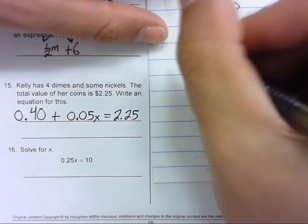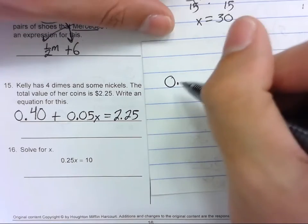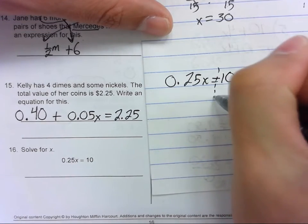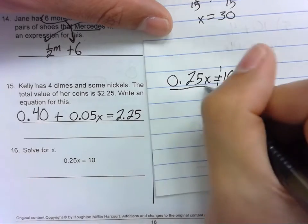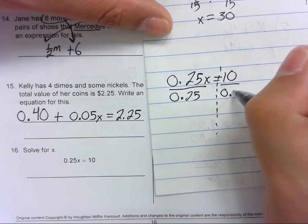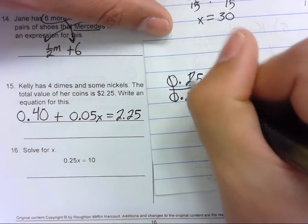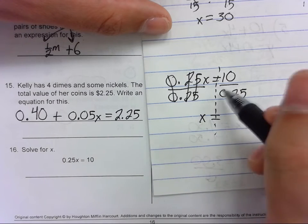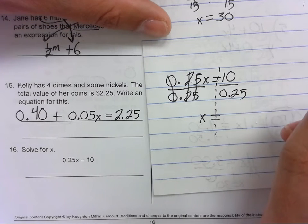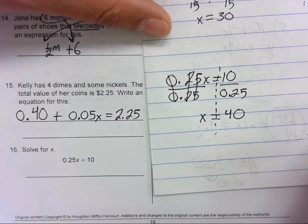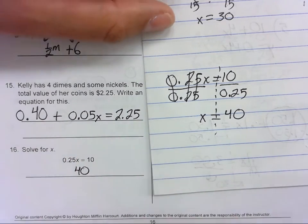Sixteen. Time to solve. 0.25x equals 10. Divide 0.25 on both sides, and x equals 10 divided by 0.25 is 40. Sixteen is 40. Thank you.